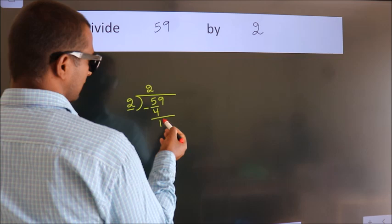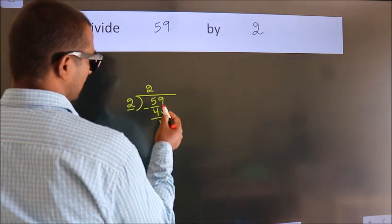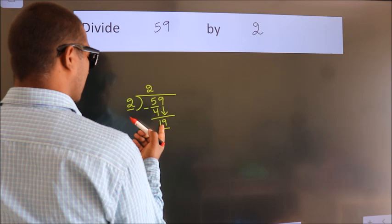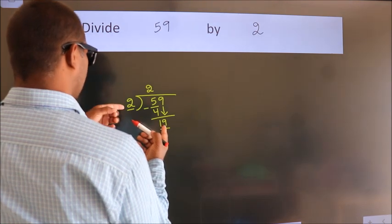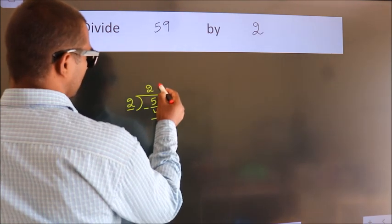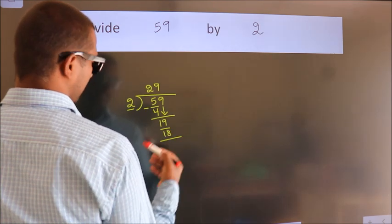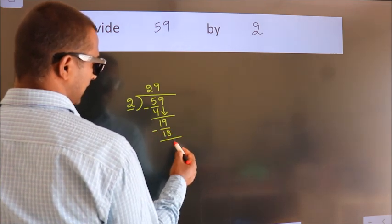After this, bring down the beside number, so 9 down. So 19. A number close to 19 in the 2 table is 2 times 9, which is 18. Now we subtract. We get 1.